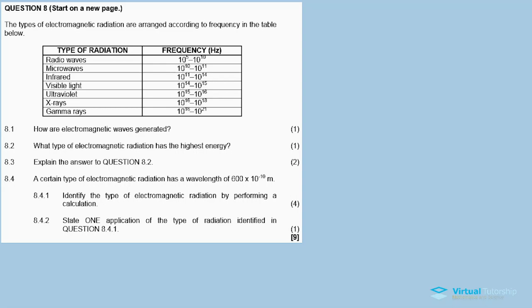Okay, now in this Question 8 about electromagnetic radiation, we are from the November 2018 question paper. In the description below there are other links which are other questions for this question paper. In Question 8, the types of electromagnetic radiation are arranged according to frequencies in the table below. This table is a frequency table listing the types of radiation according to their frequencies. Electromagnetic radiation is the radiation coming from the sun.